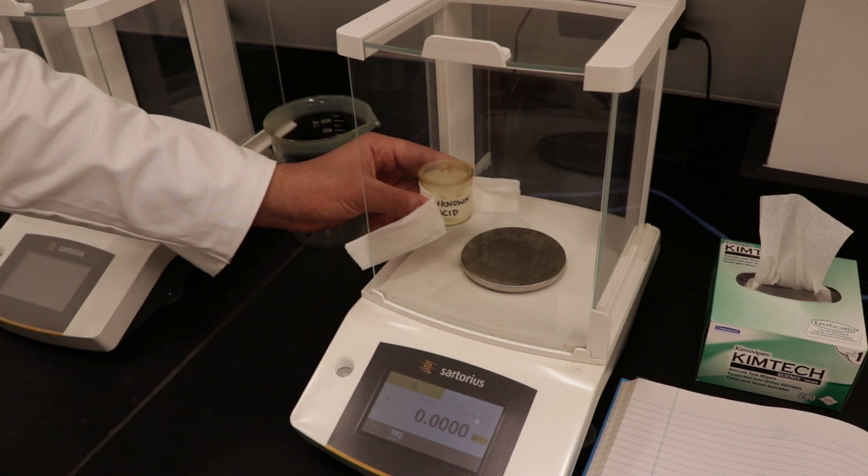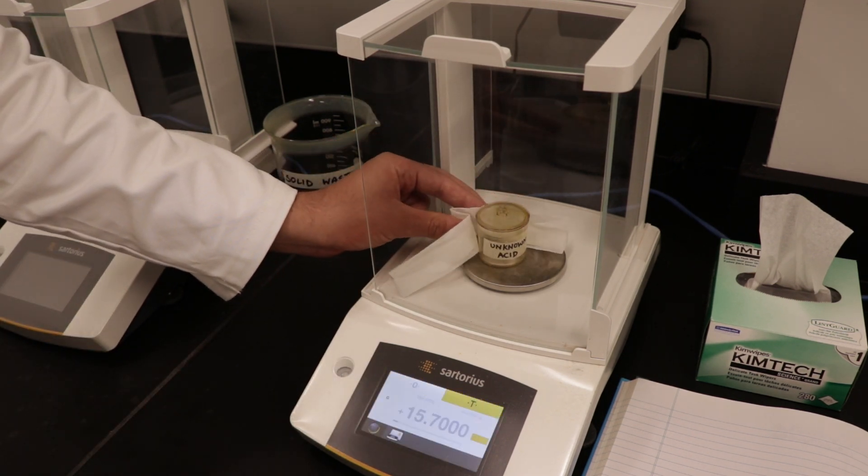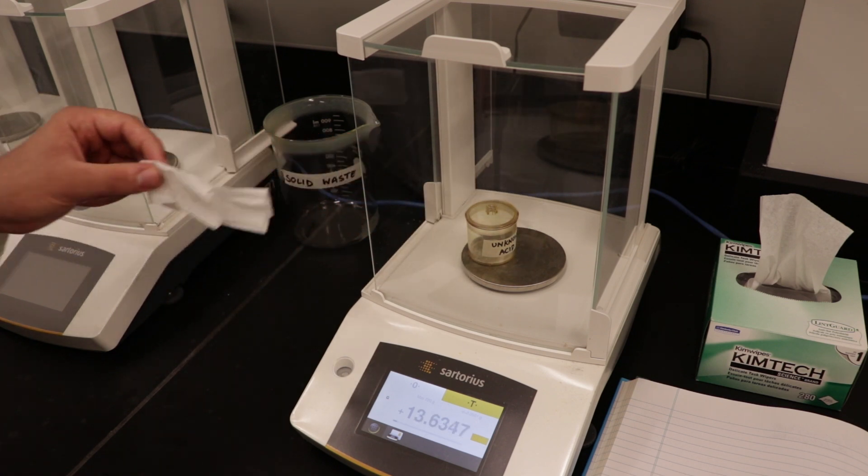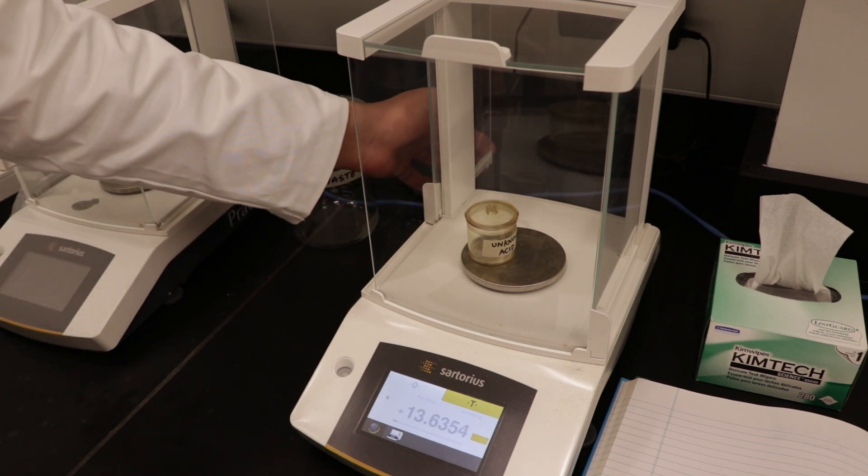Carefully replace the lid of the weighing bottle before returning to the analytical balance. Place the empty bottle back in the same balance and record the mass of the empty bottle.